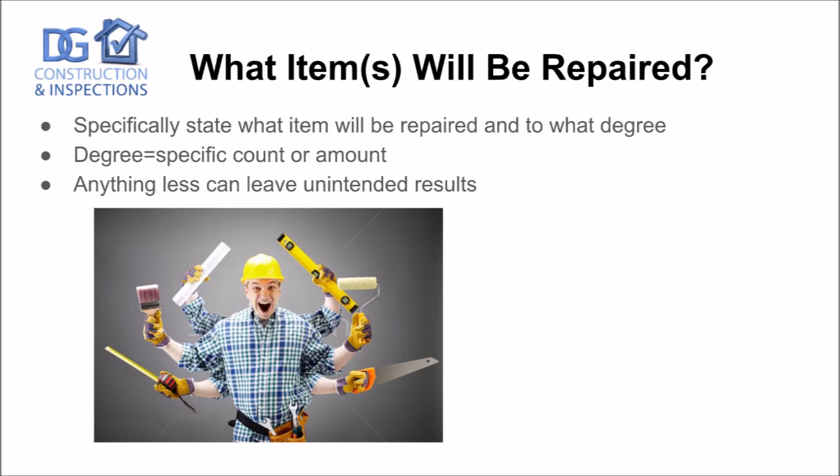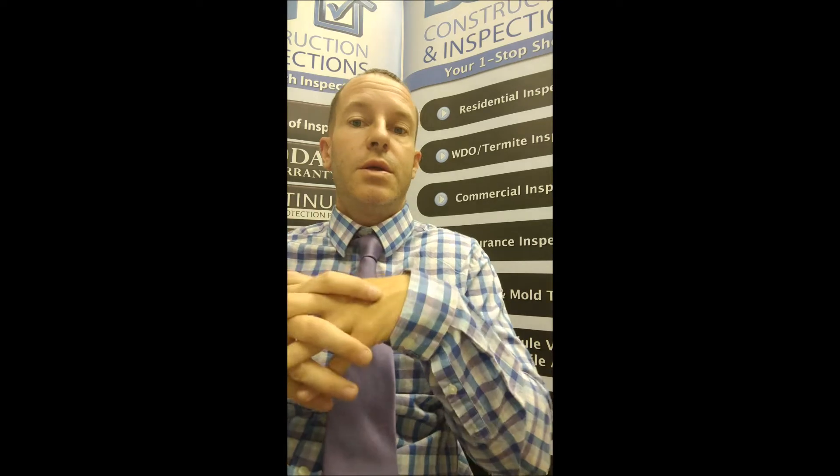What items will be repaired? Specifically state what item will be repaired and to what degree — the degree can equal a specific count or a specific amount. Anything less can leave unintended results. You want to list the exact items you want repaired, for example an electric panel or an oversized breaker for the air condenser. That way there's no breakdown. This is probably the easiest of the three, but the other two are probably the more important W's in properly drafting your repair addendum.